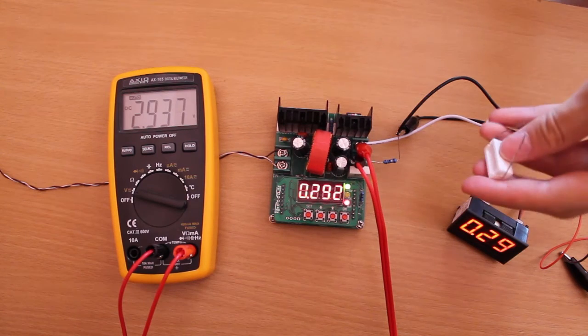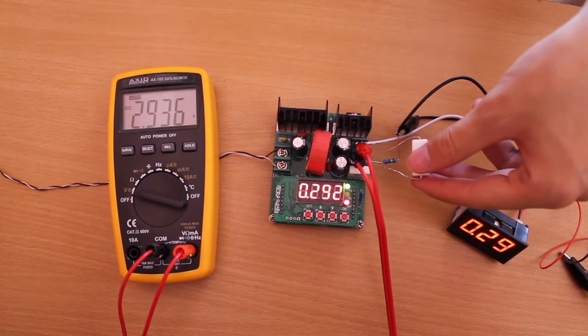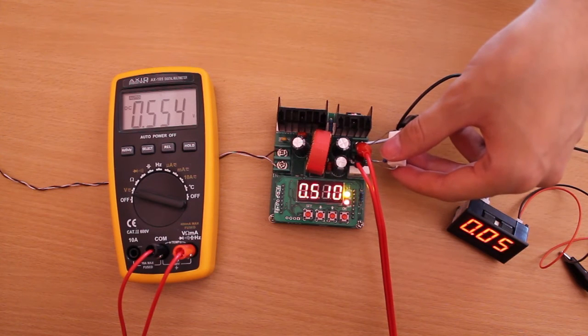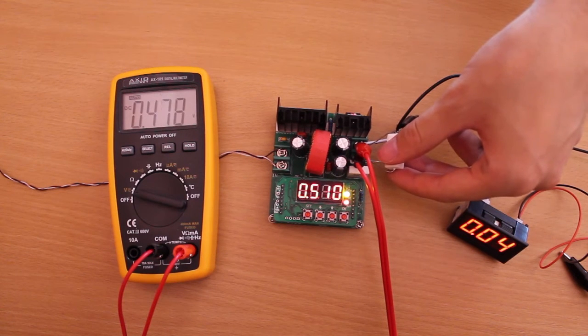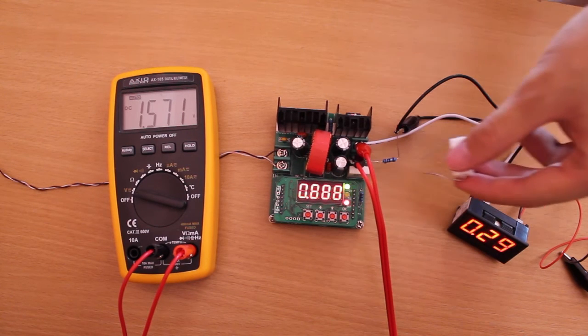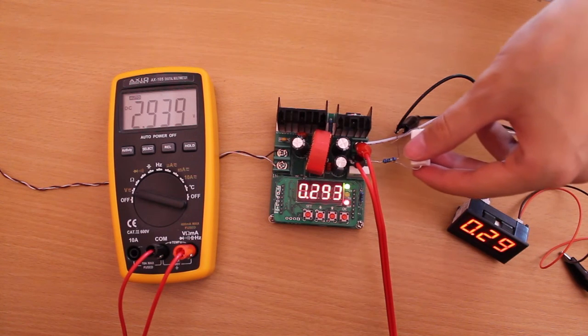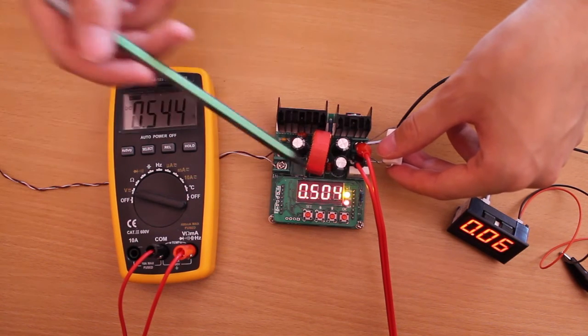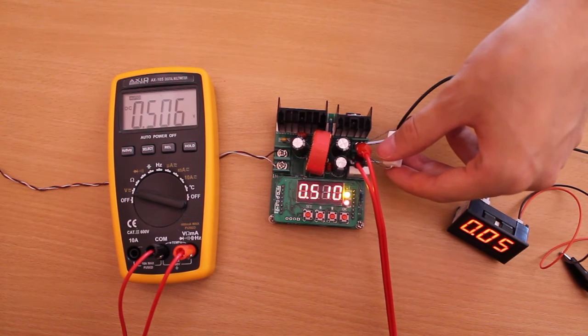If we connect a 1 ohm resistor in parallel, you can see that the device goes into constant current again, which is limited at 510mA.